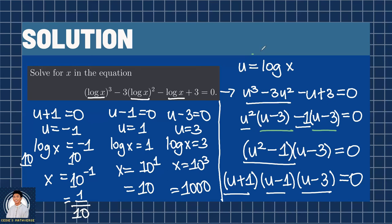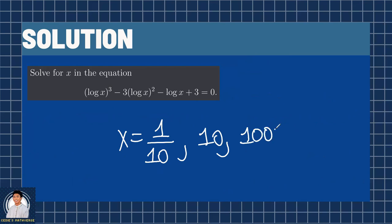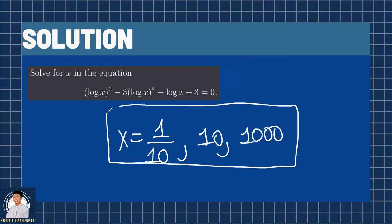So we have our three answers now. We have x equals 1 over 10, 10, and 1,000. And these are the roots or the solutions of this logarithmic equation.